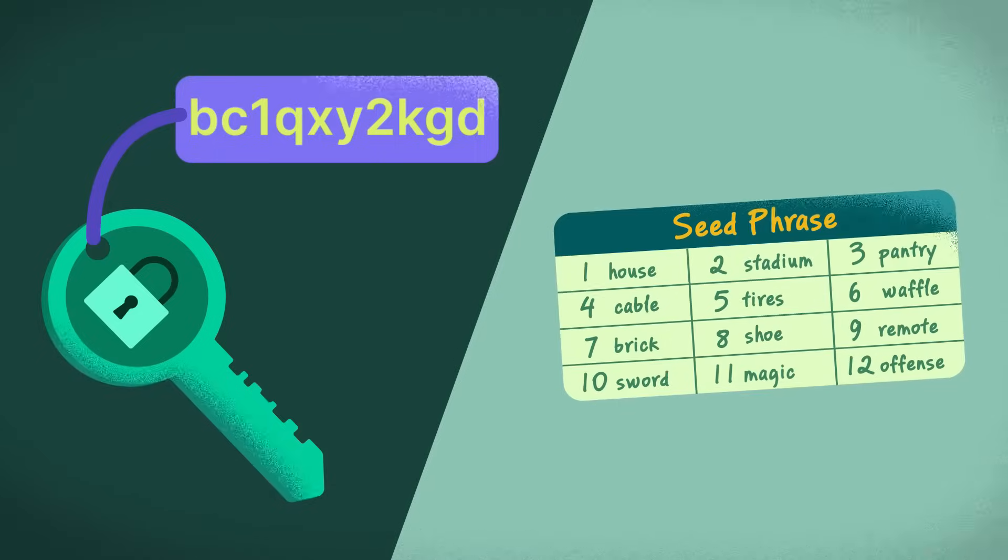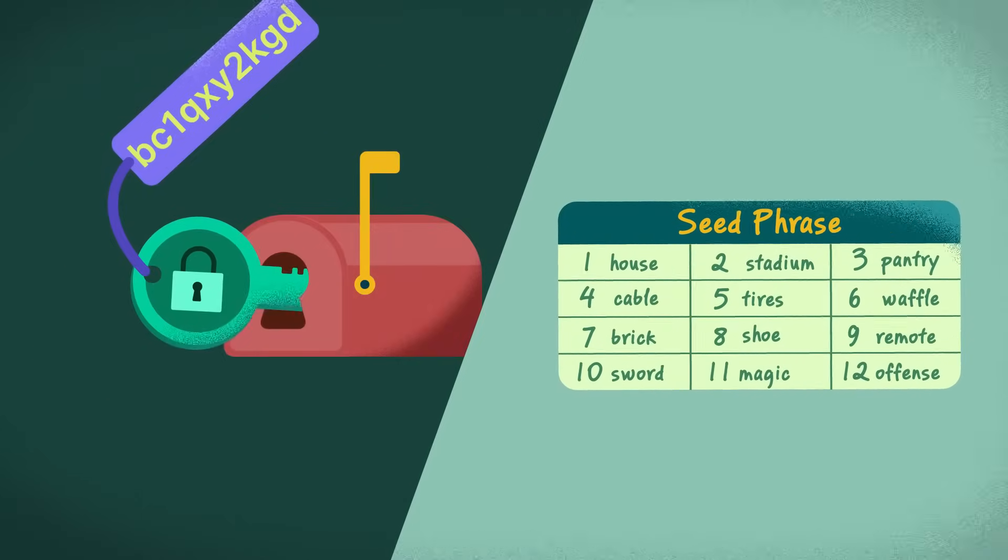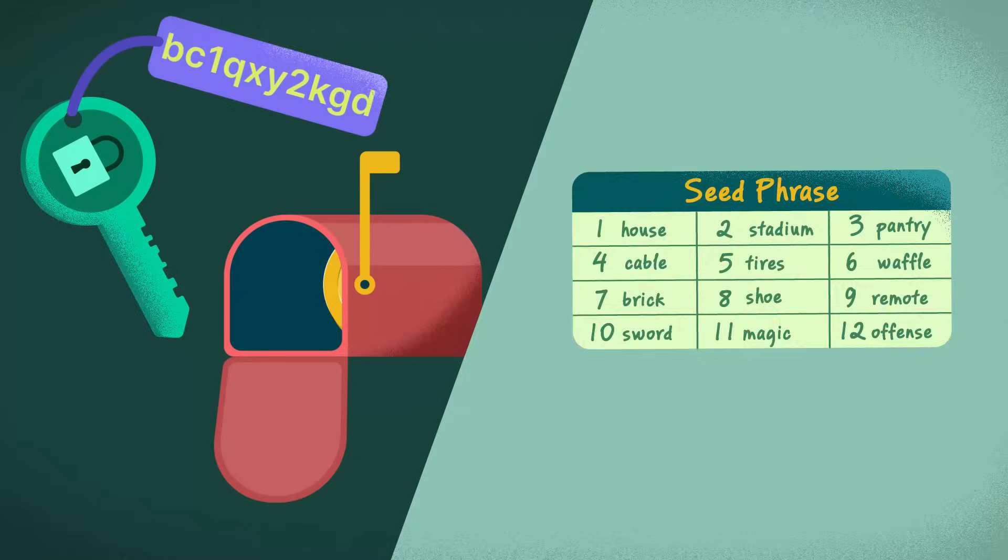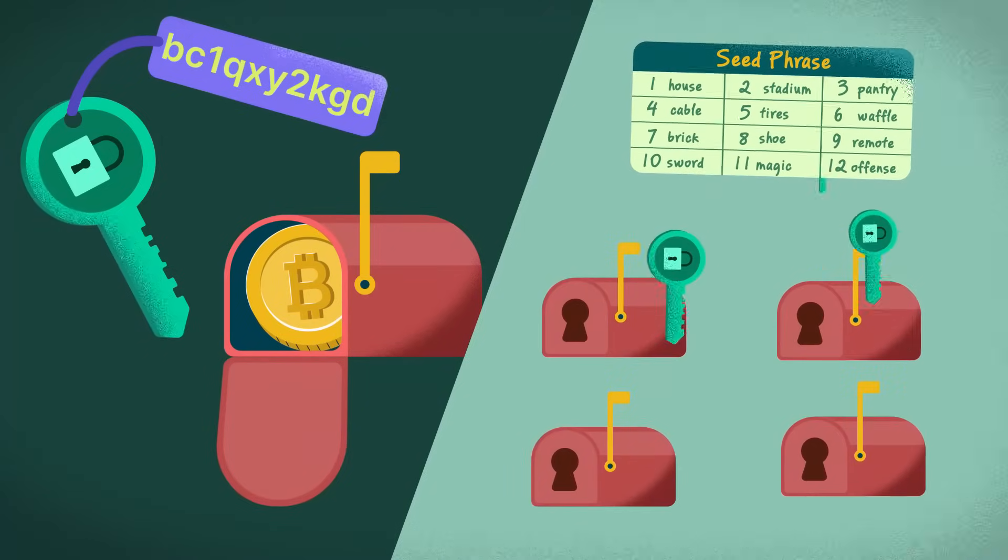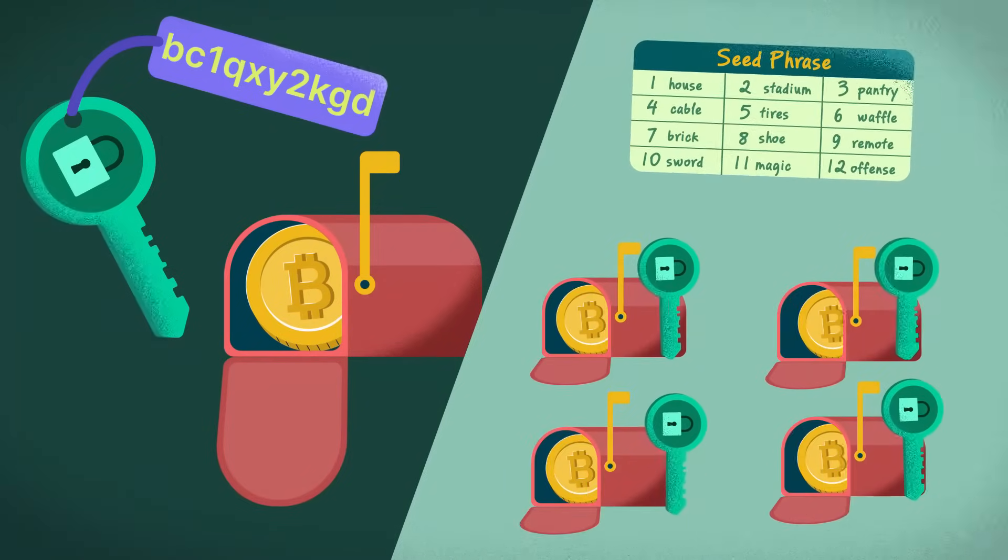Private keys are different from seed phrases. Imagine an address as a mailbox that requires a private key to unlock. Meanwhile, a seed phrase is like having a bunch of private keys that allow you to unlock a collection of mailboxes.